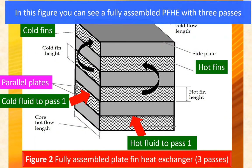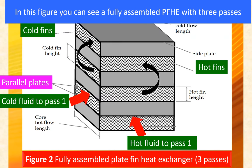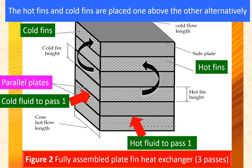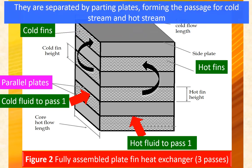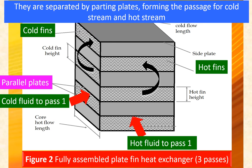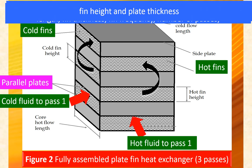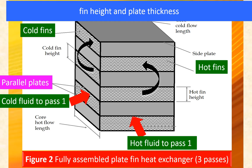This figure shows a fully assembled plate fin heat exchanger with three passes. The hot fins and cold fins are placed alternately one above the other, separated by parting plates forming passages for the cold and hot streams. The fin geometry — also called core data — includes fin length, fin thickness, fin frequency, number of passes, fin height, and plate thickness.